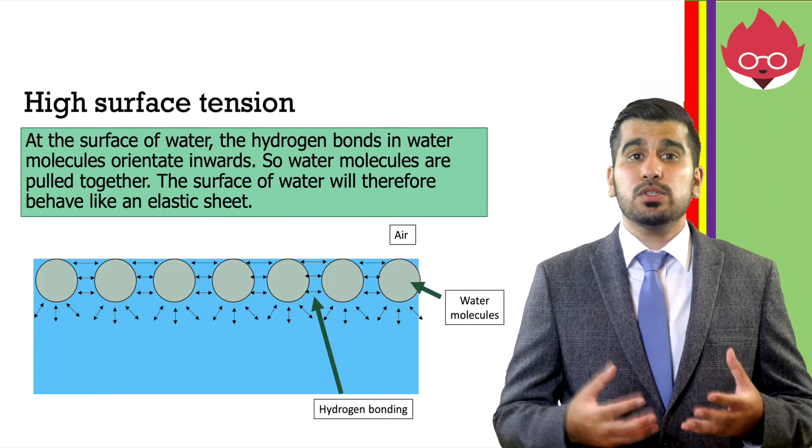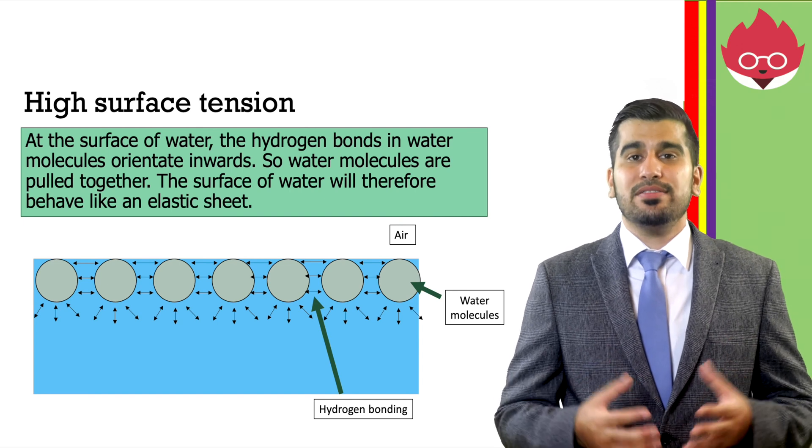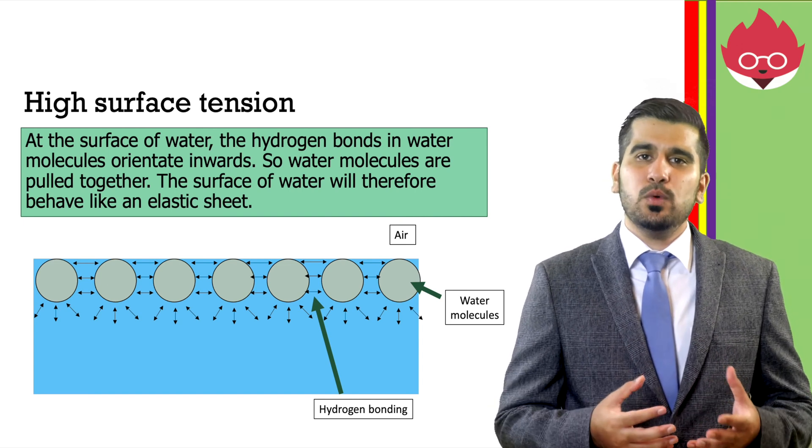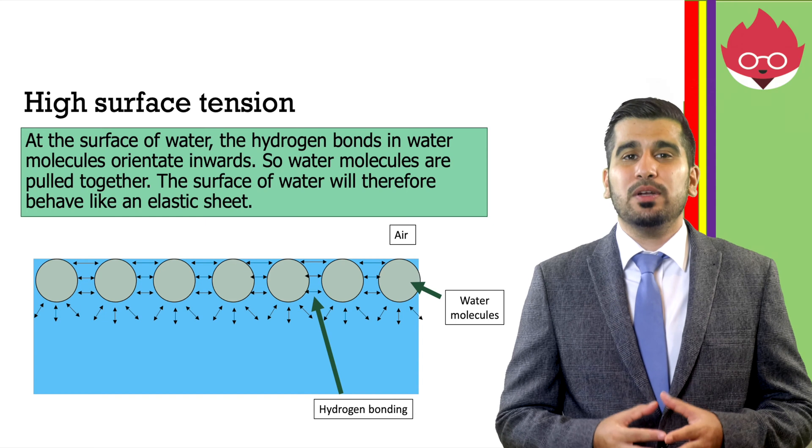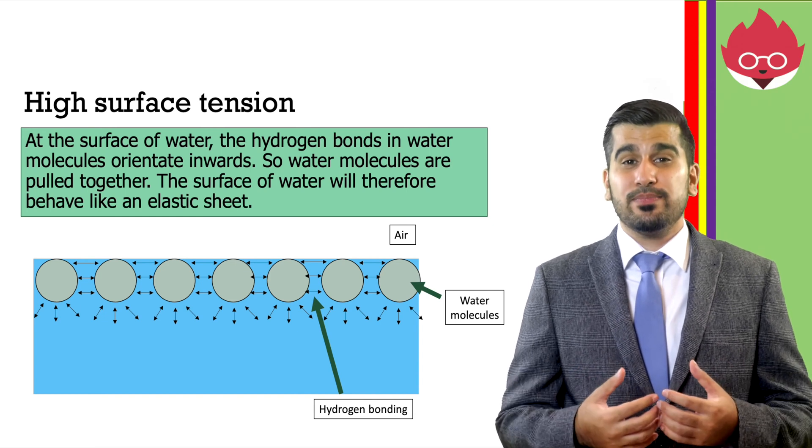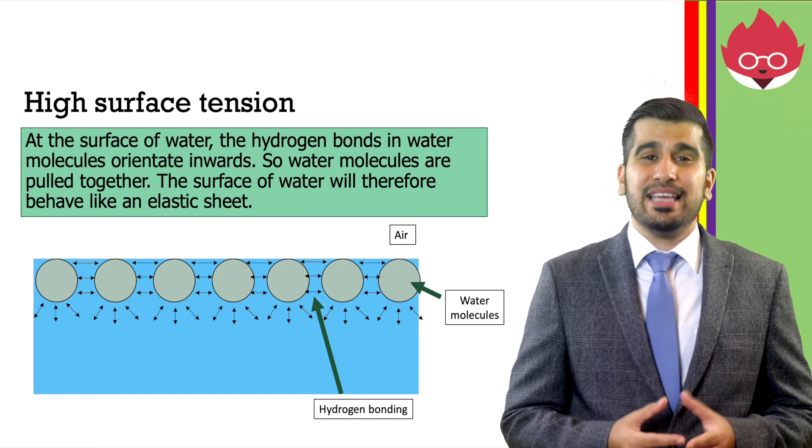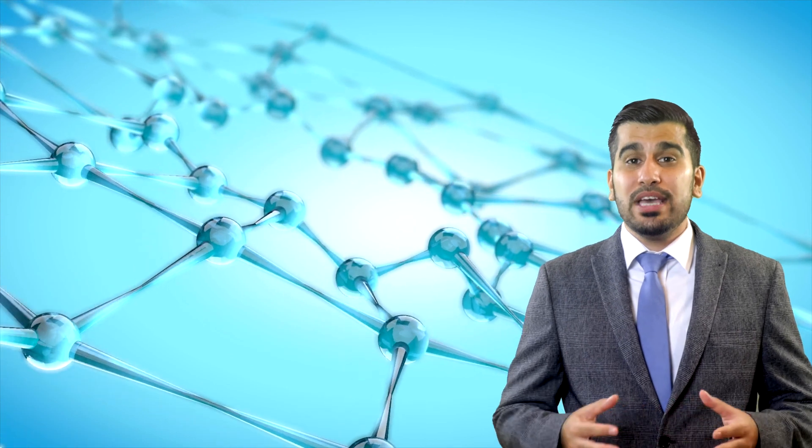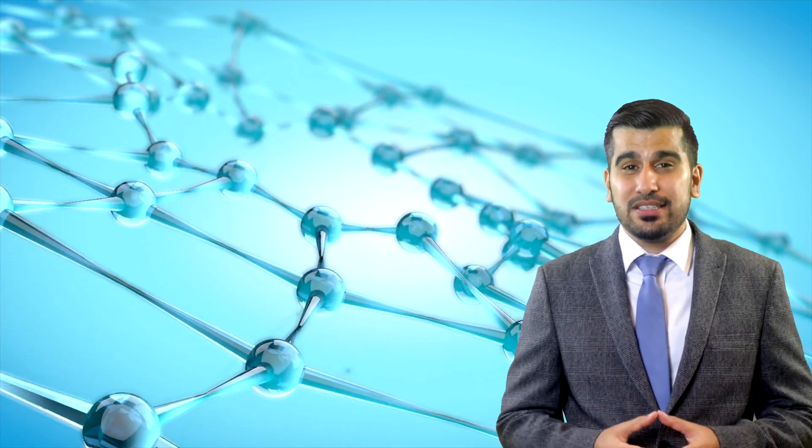The cohesive nature of water also means it has a high surface tension. At the surface of water, the hydrogen bonds in the water molecules orientate inwards. So water molecules are pulled together. The surface of the water will therefore behave like an elastic sheet. This allows water to form droplets on surfaces and run off. It also allows certain organisms to land and move on the water's surface.